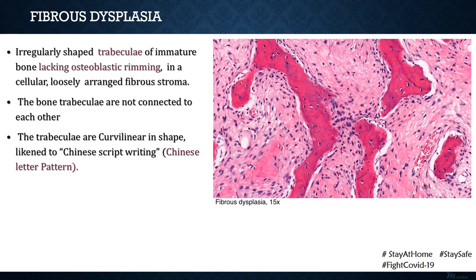Identification of fibrous dysplasia requires a biopsy. An incisional bone biopsy is performed and slides are observed under the microscope. Microscopic examination shows irregularly shaped trabeculae of immature bone that lack osteoblastic rimming — this is a characteristic feature of fibrous dysplasia. A normal histological section of bone shows osteocytes within lacunae with trabeculae surrounded by osteoblasts in the periphery. In fibrous dysplasia, however, osteocytes within lacunae are present but peripheral osteoblastic rimming is deficient.